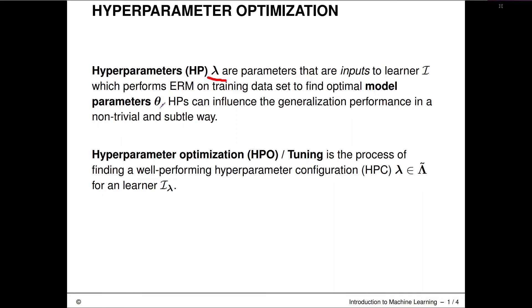Hyperparameter optimization is simply the process of finding a well-performing hyperparameter configuration. So configuration is just terminology for a concrete setting of all hyperparameters in the search space for a certain learning algorithm I, which is dependent here on this hyperparameter configuration.